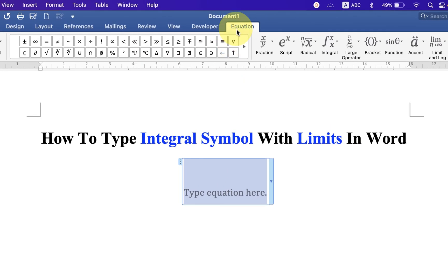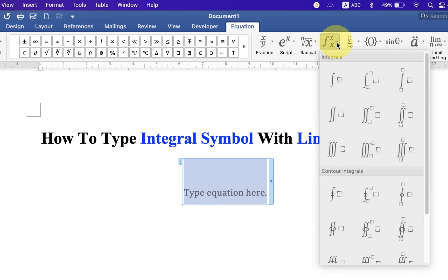Now under the equation tab you will see the option Integrals. Click on the dropdown and you will see the first option is integral, but it doesn't have limits. So select the second one. Or if you want double integration or triple integration, you can select any one of them.